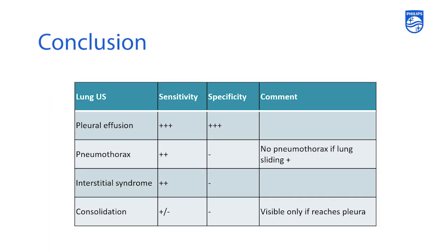Lung ultrasonography is very sensitive and specific for the diagnosis of pleural effusions. For pneumothorax, it is very sensitive but not as specific. This means that if you see lung sliding, the patient does not have a pneumothorax; but if no lung sliding is seen, you cannot rule out a pneumothorax without working through the algorithm discussed in the pneumothorax talk — making this a sensitive but not highly specific test for the evaluation of pneumothorax.